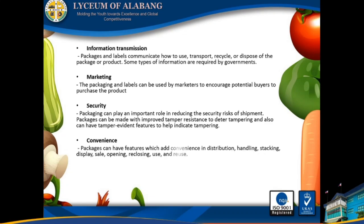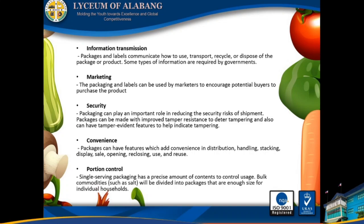Convenience. Packages can have features which add convenience in distribution, handling, stocking, display, sale, opening, reclosing, use, and reuse. Portion control: single-serving packaging has a precise amount of contents to control usage. Bulk commodities such as salt will be divided into packages that are of enough size for individual households.